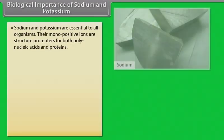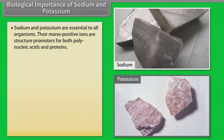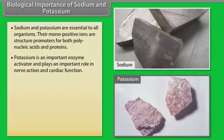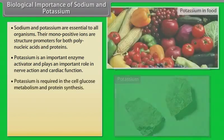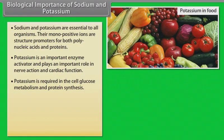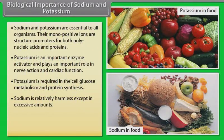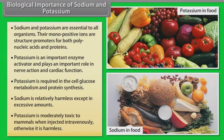Biological importance of sodium and potassium. Sodium and potassium are essential to all organisms. Their monopositive ions are structure promoters for both polynucleic acids and proteins. Potassium is an important enzyme activator and plays an important role in nerve action and cardiac function. Potassium is required in cell glucose metabolism and protein synthesis. Sodium is relatively harmless except in excessive amounts. Potassium is moderately toxic to mammals when injected intravenously; otherwise it is harmless.